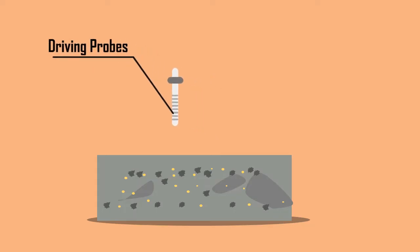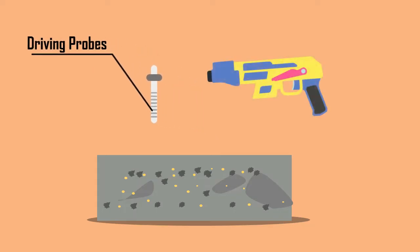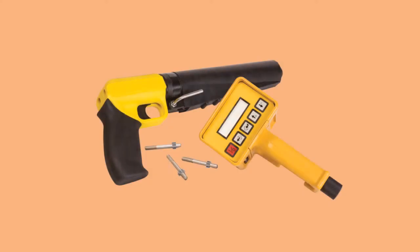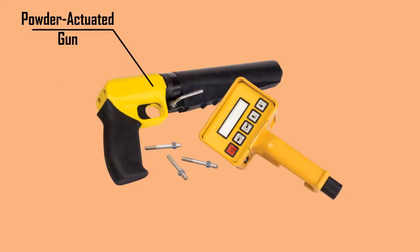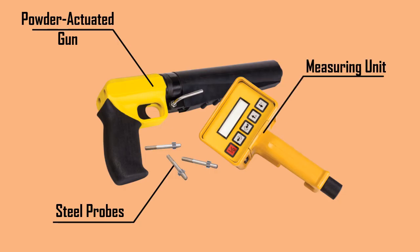The most commonly used penetration resistance method is the Windsor probe system. The system consists of a powder actuated gun, which is used to drive hardened alloy steel probes into concrete structures, along with a measuring unit.